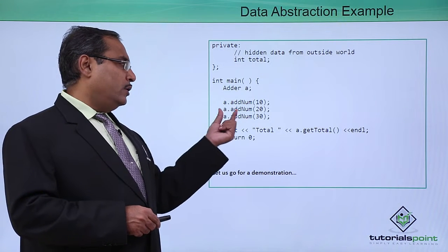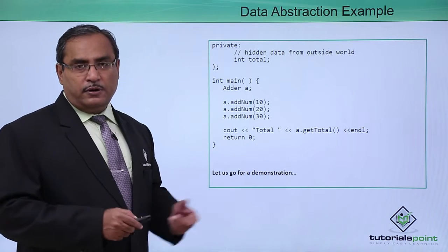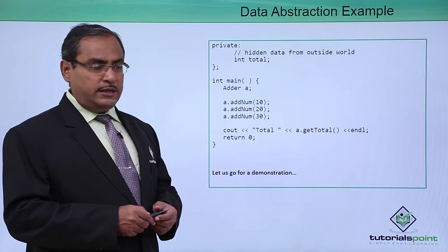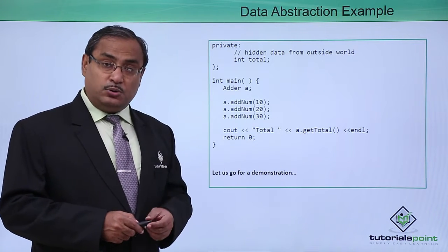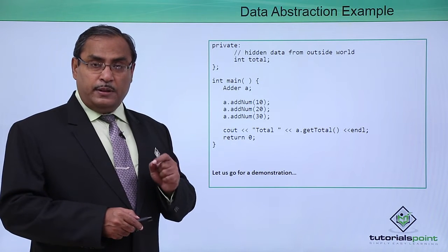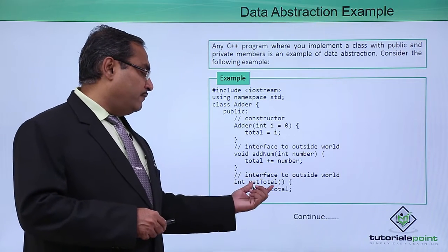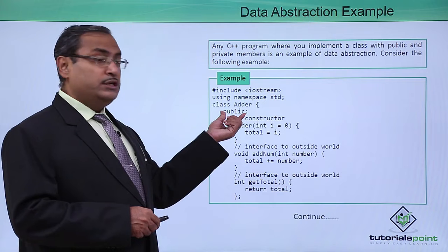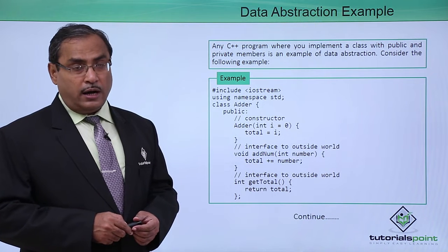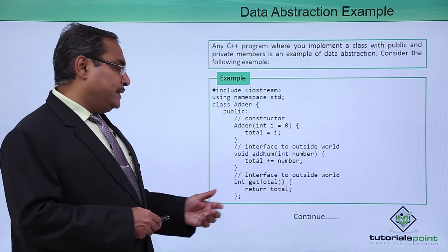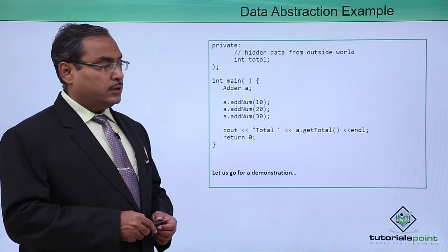Using object 'a', I have called a.addNum three times, passing 10, 20, and 30. We then try to get the value of total printed, but since total is a private member variable, it cannot be accessed directly. To access total, we must use the public function getTotal, which can access total internally. So we call a.getTotal to print the value of total accordingly.